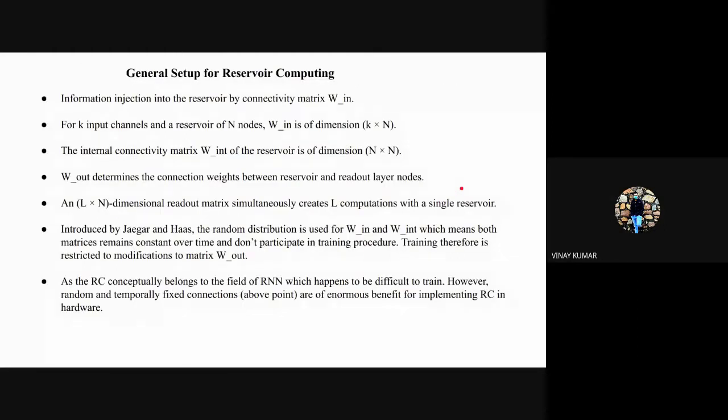The general setup: information is injected via a connectivity matrix. If we assume there are k input channels and n nodes (neurons), we have an input connectivity matrix k into n. There is this internal connectivity matrix of the reservoir which is n cross n because we have n nodes in one layer.